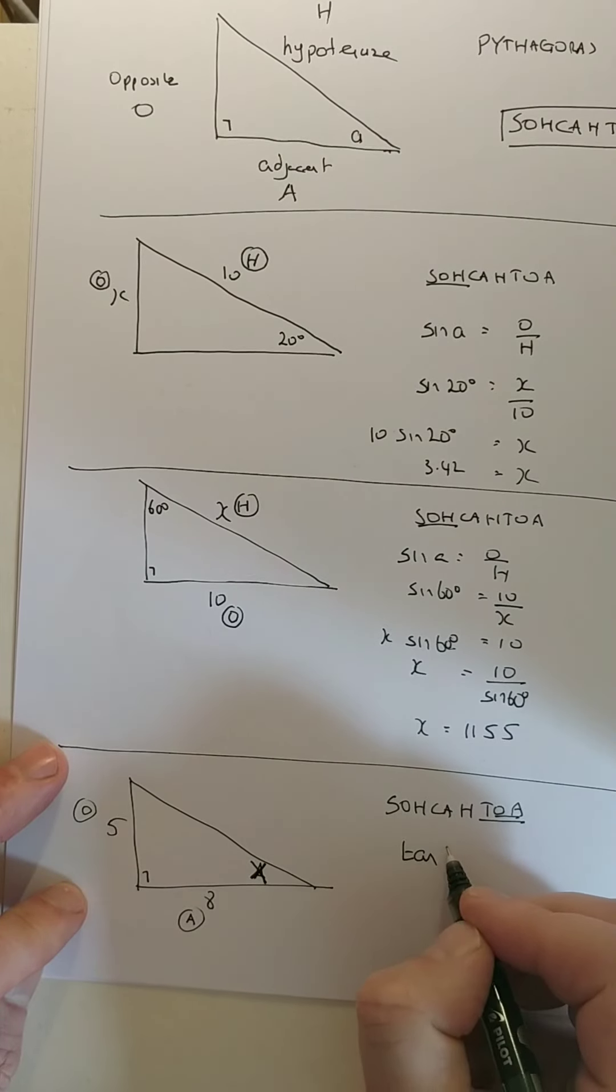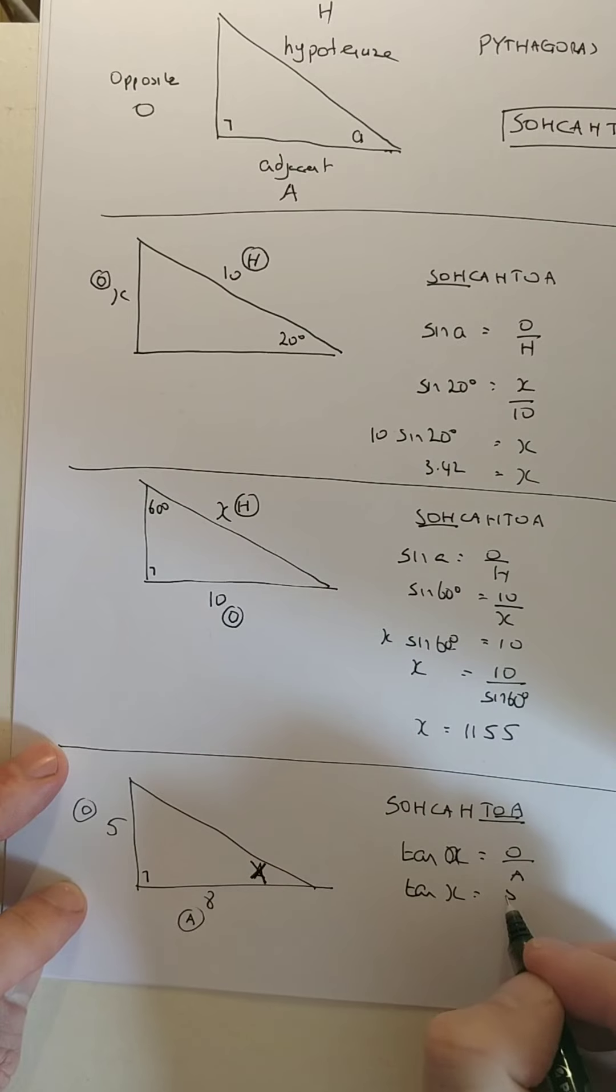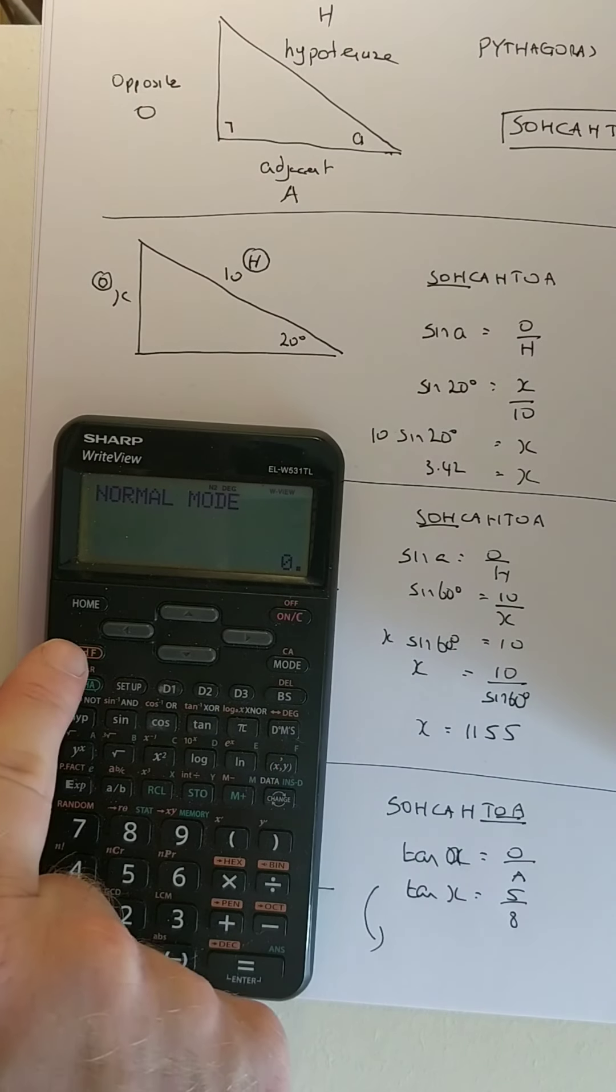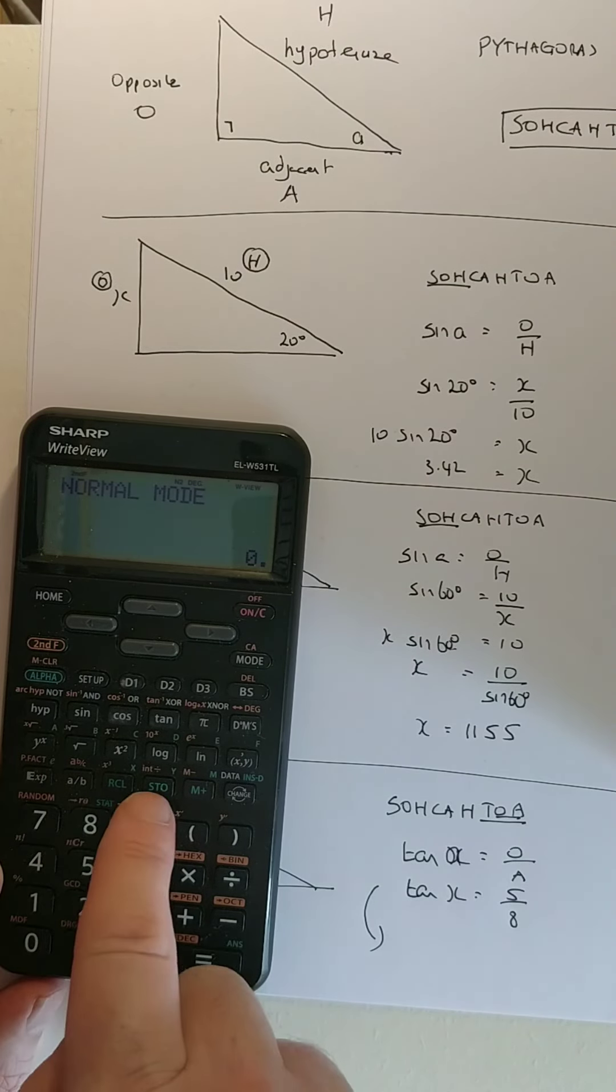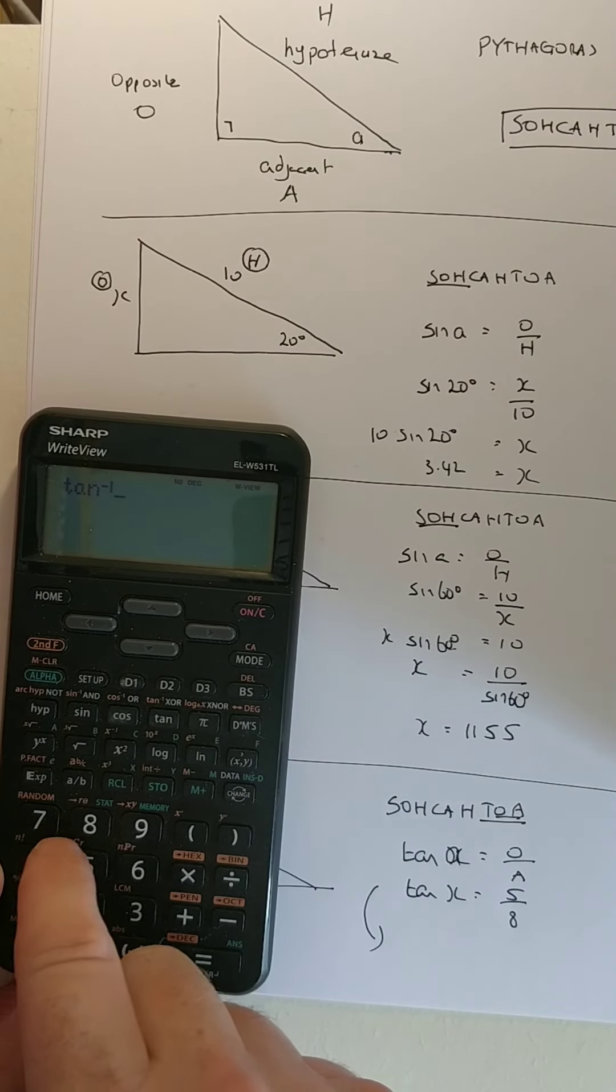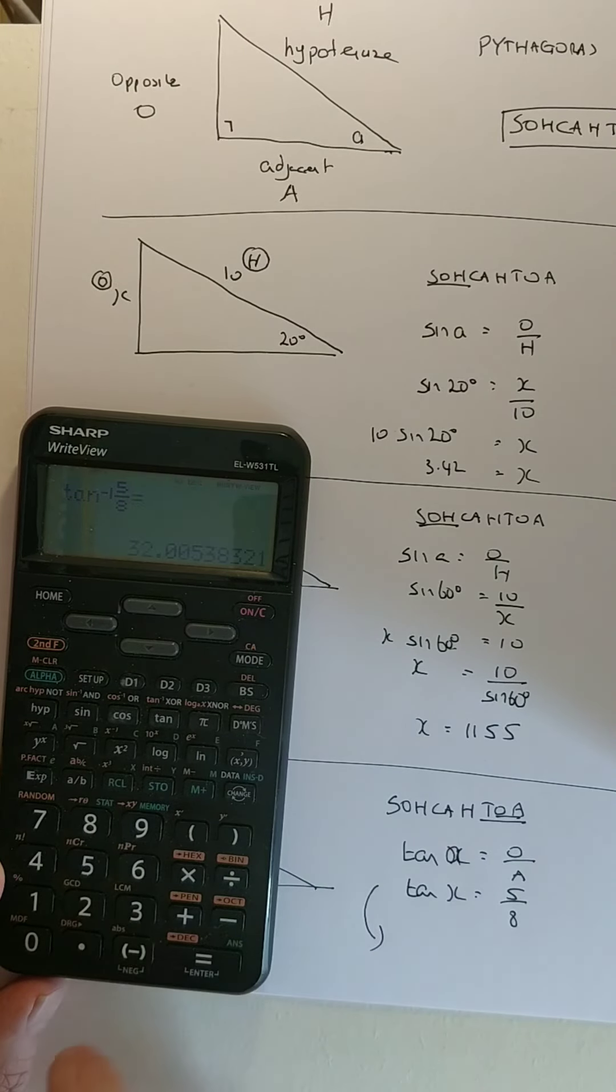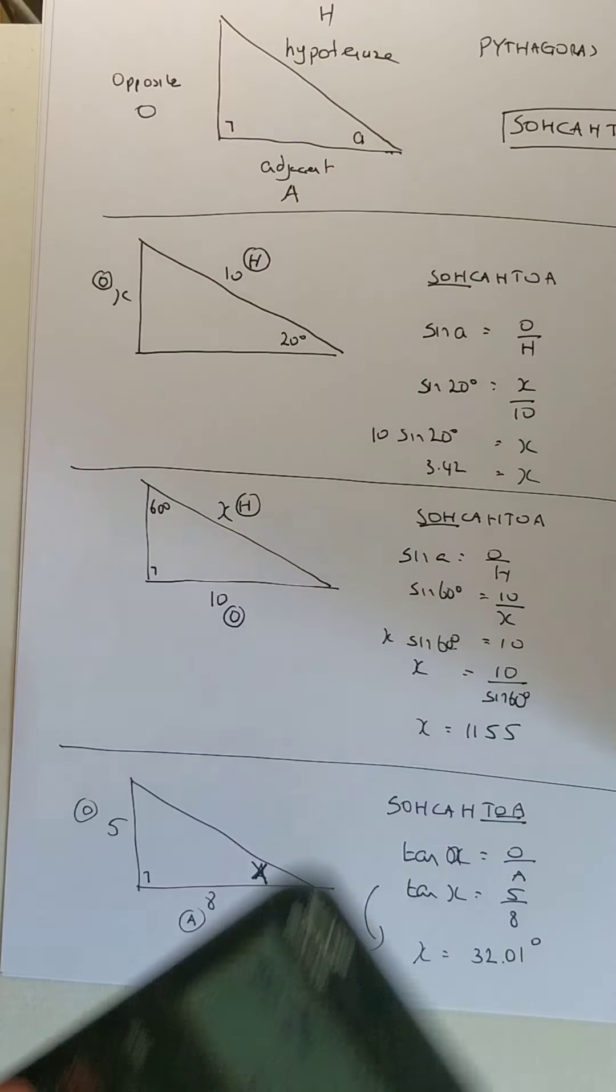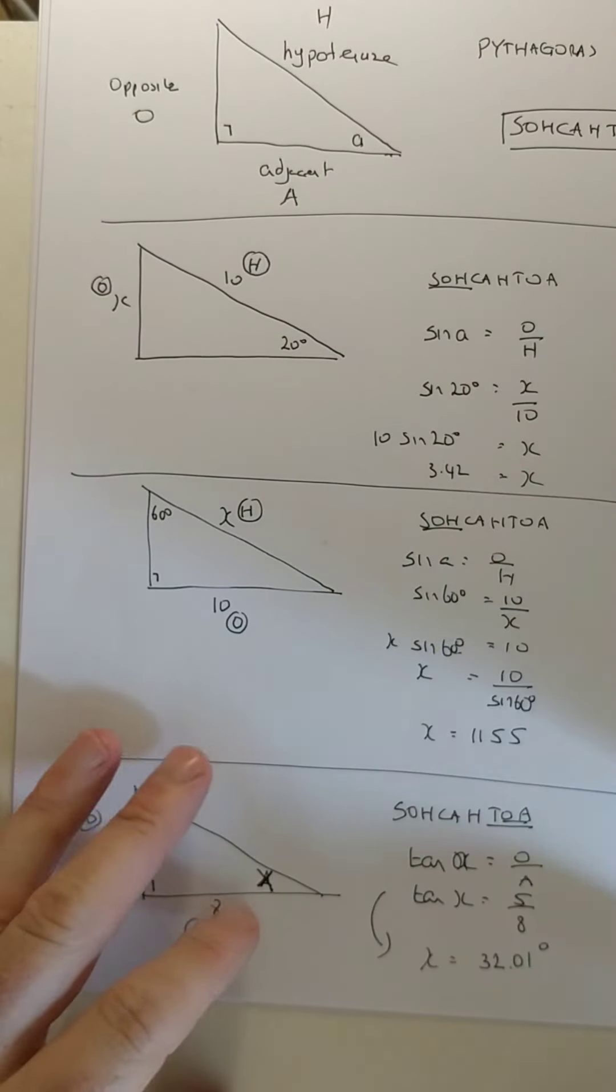So we write down the tan of the angle is O over A. So the tan, sorry, tan of the angle. So it's the tan of X is 5 over 8. And remember, you're going from tan of X back to X. Remember what you do? You go backwards in your calculator, which is a second function and tan. The orange one. Second function and tan. So, you say second function tan. You get tan to the power of minus 1. And then you put in your fraction because it's 5 over 8. And you get your answer. And your answer is 32 degrees. 32.01 degrees as it turns out. There you go. So, you're going to practice these.